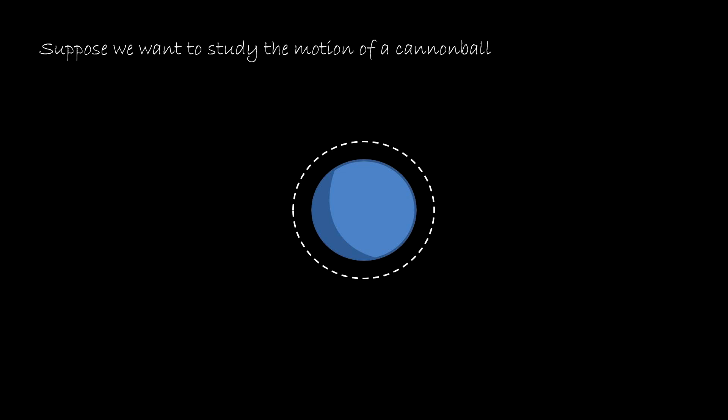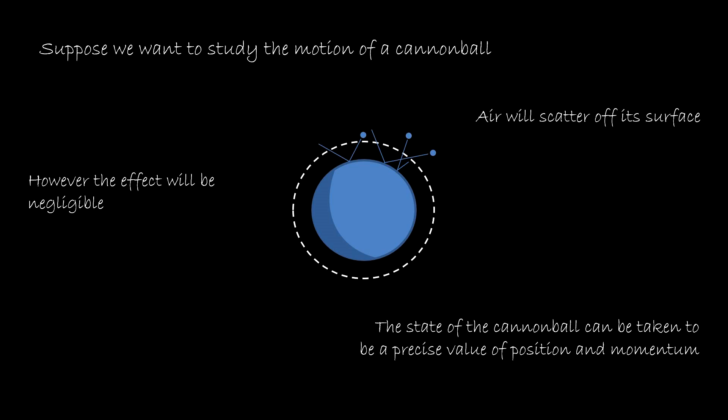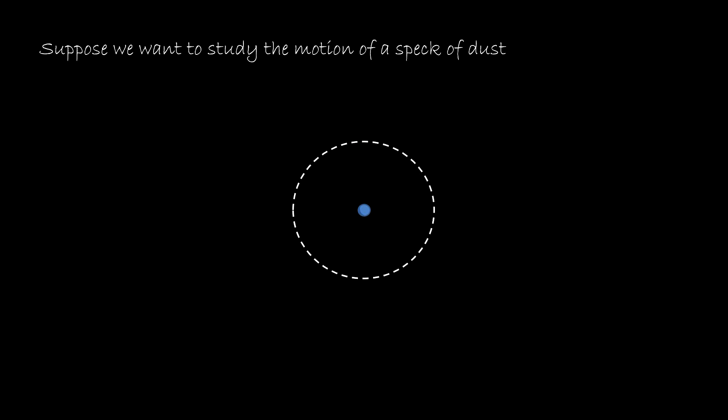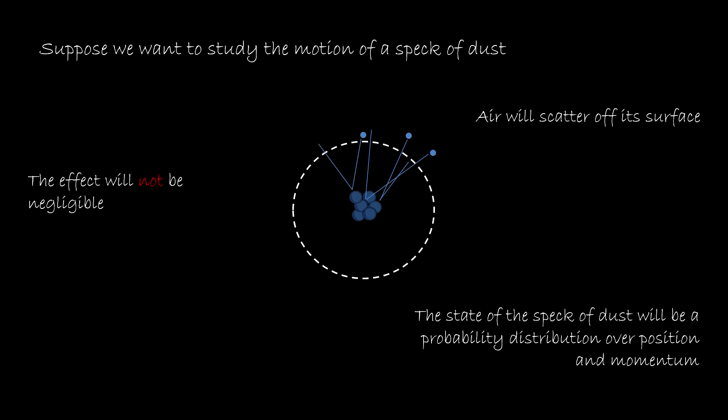Suppose we want to study the motion of a cannonball. As the cannonball moves through the air, air molecules will scatter off its surface. However, given the mass of the cannonball, in most circumstances the effect will be negligible. So the state can be taken to be a precise value of position and momentum. Now suppose we want to study the motion of a speck of dust. Air will scatter off its surface, but in this case the effect will not be negligible.